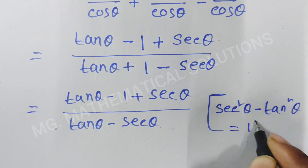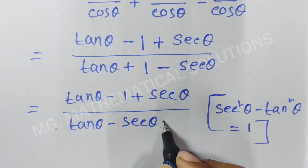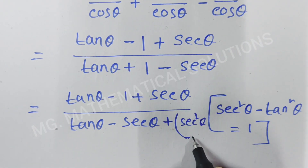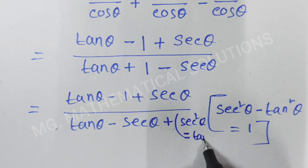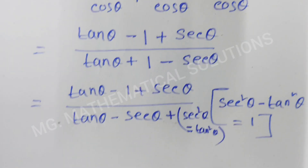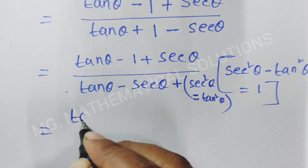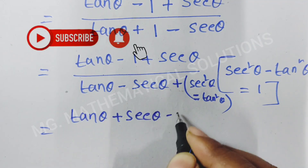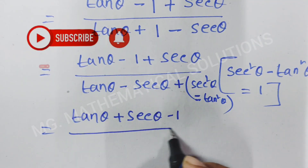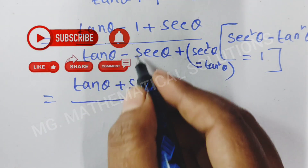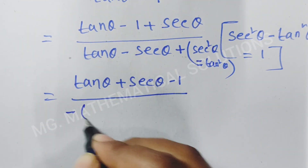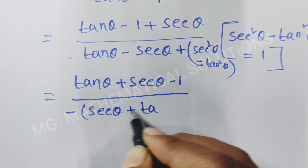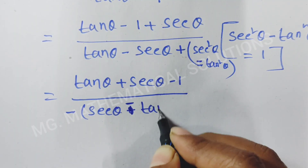So sec²θ minus tan²θ equals 1. We substitute this value in place of 1, putting plus sec²θ minus tan²θ in the numerator. So we get tan θ plus sec θ minus 1, and in the denominator we take common minus: so sec θ plus minus tan θ.